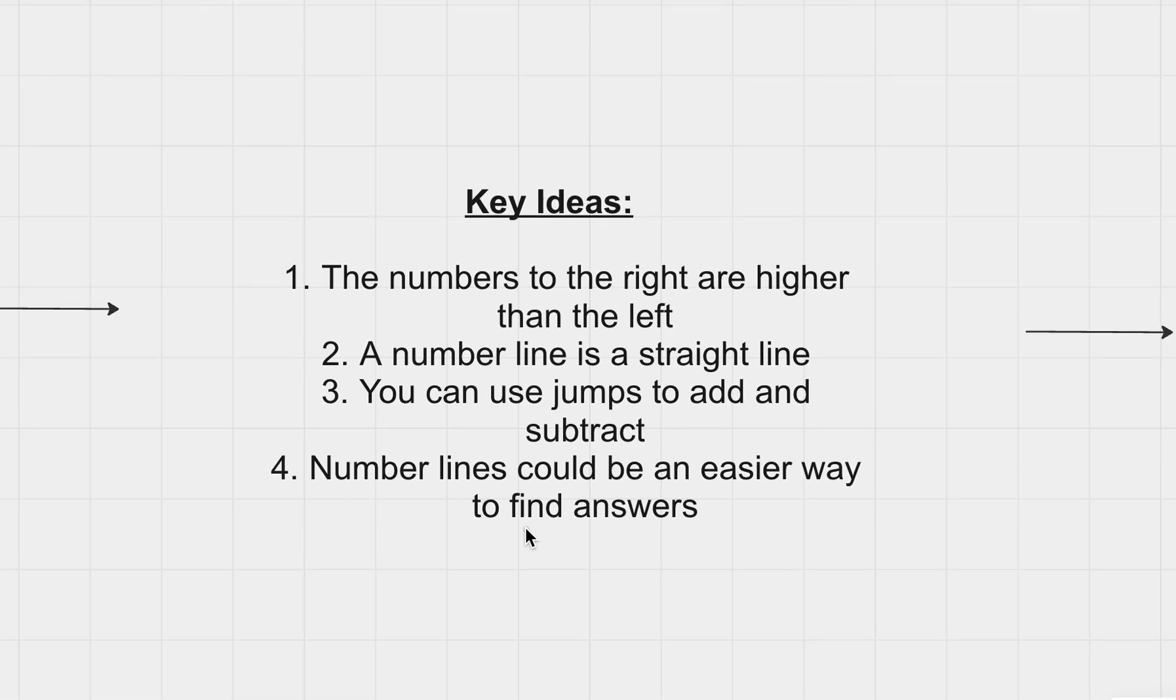A number line is just a straight line with numbers on it that goes from negative infinity all the way to positive infinity. It keeps going on forever, and you can use jumps to add and subtract numbers on a number line. If you're just learning addition and subtraction, number lines are a great way to understand that, and can help you perform complex problems in the future.